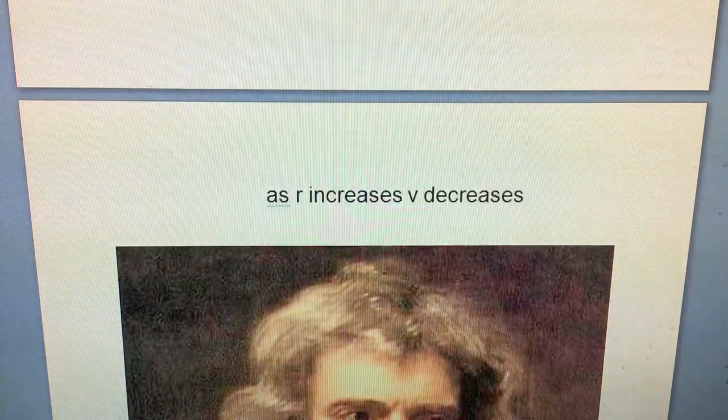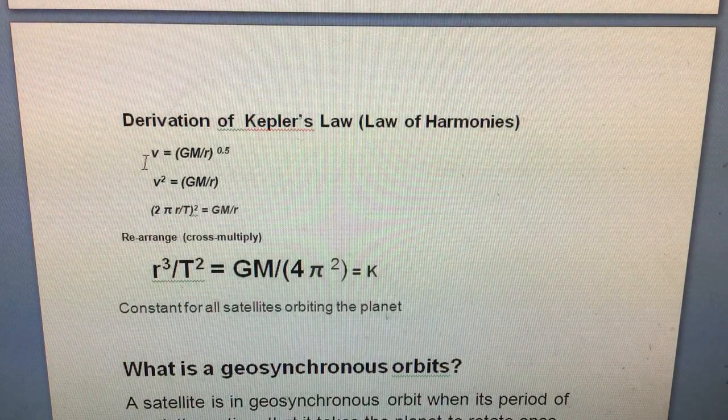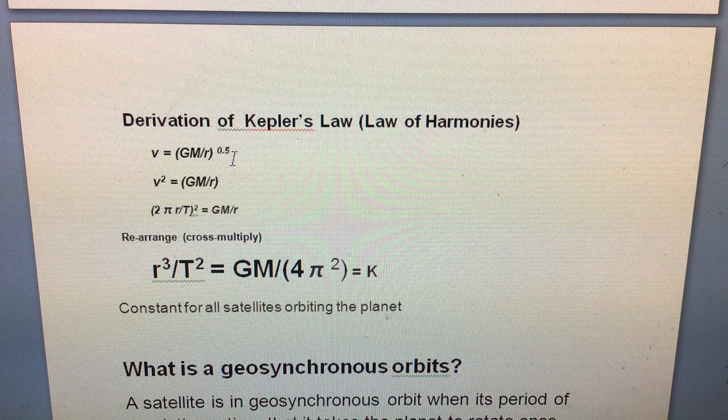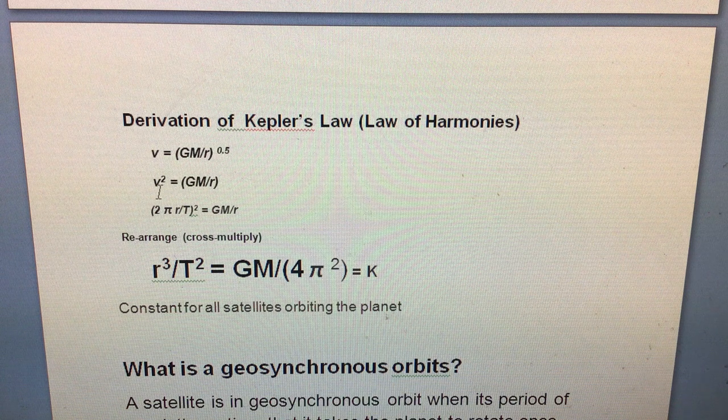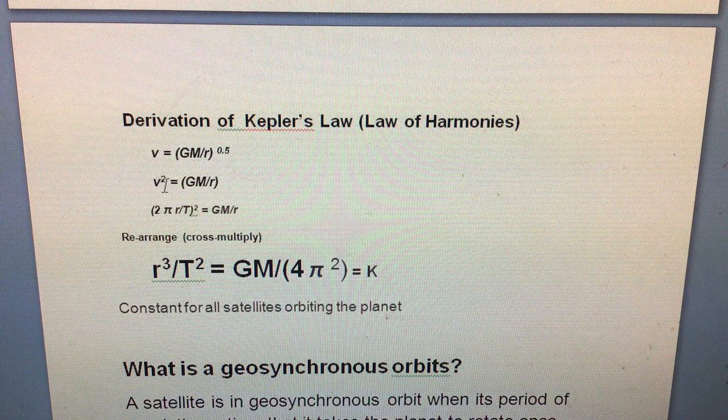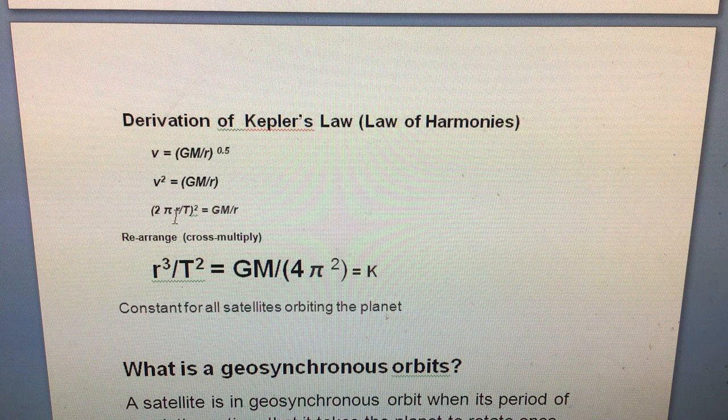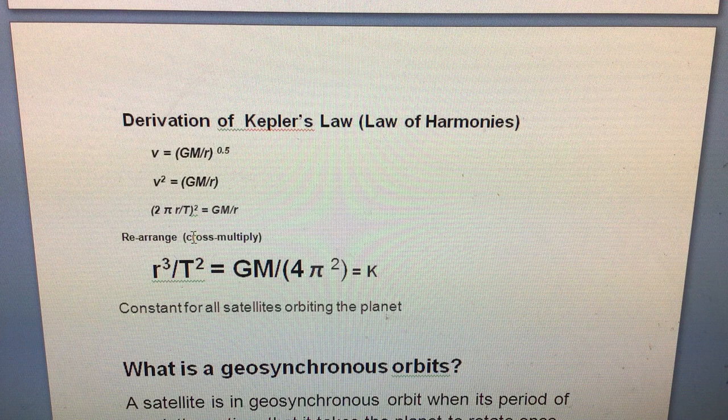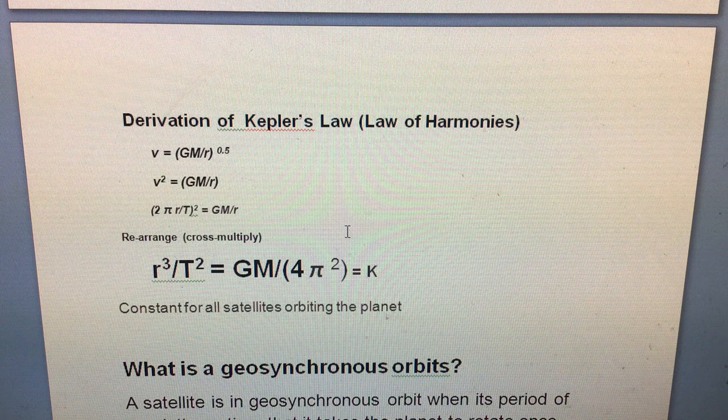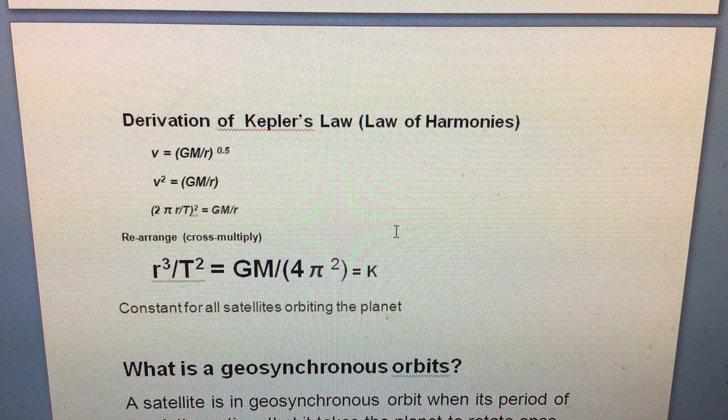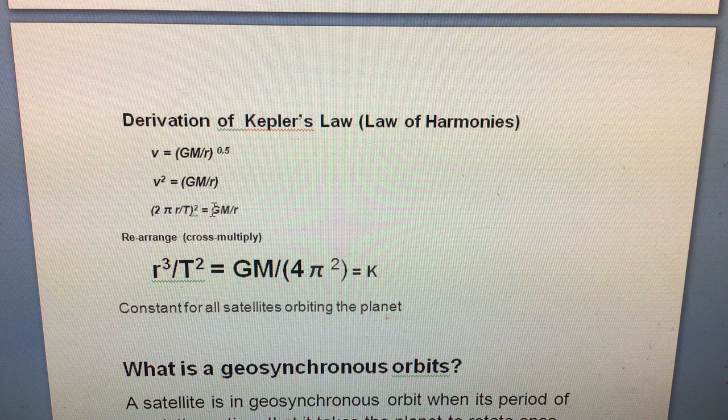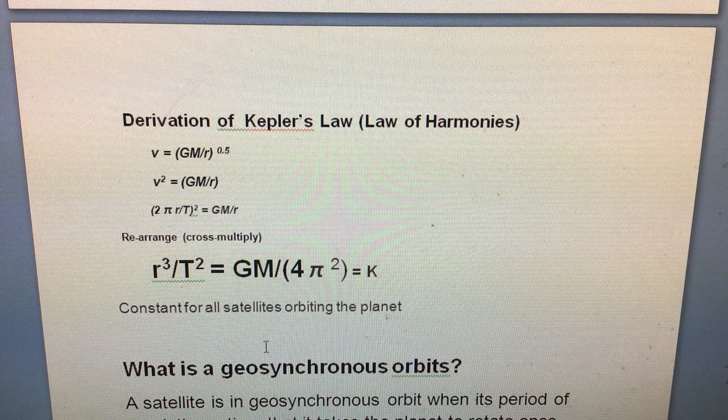So then we can take that formula and we can rearrange it. We can square both sides, and when I square both sides, the square root disappears. I get v squared equals GM divided by r. I then replace v - since v is your speed - I replace it by 2πr divided by T, big T. Big T is the period of orbit. It's the time that it takes the satellite to go around once. 2πr is the circumference of the orbit, so your circumference divided by the period is equal to the speed. Square that, and then I rearrange this, cross-multiply.